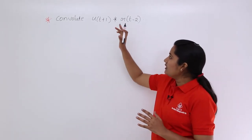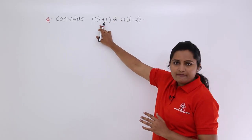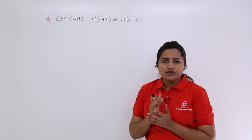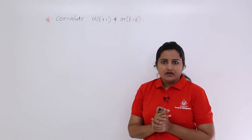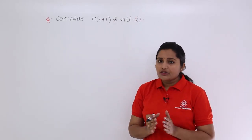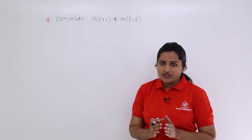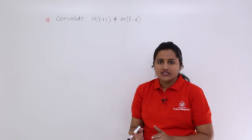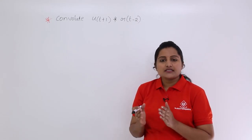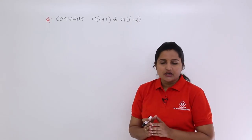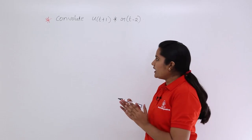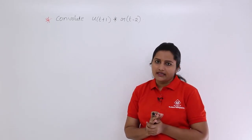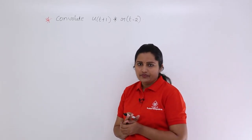When you see a unit step function and a ramp in convolution — that is, a unit step function and its next integration — you can use the differentiation property of convolution.